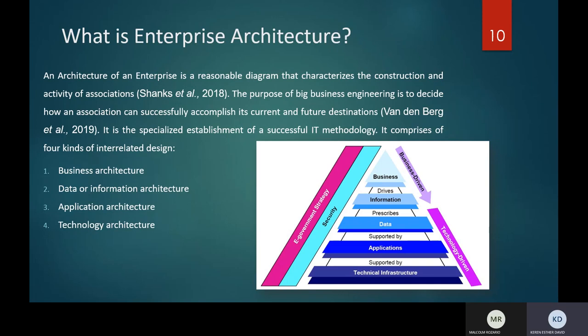This slide describes detailed knowledge about the architecture of an enterprise and its types. For any organization, its architecture is very important because it is the technical foundation of a perfect information technology strategy. It is basically a diagram that states the different activities and construction of the associations. The architecture of an enterprise has four different kinds of designs: business architecture, technology architecture, information and data architecture, and application architecture.